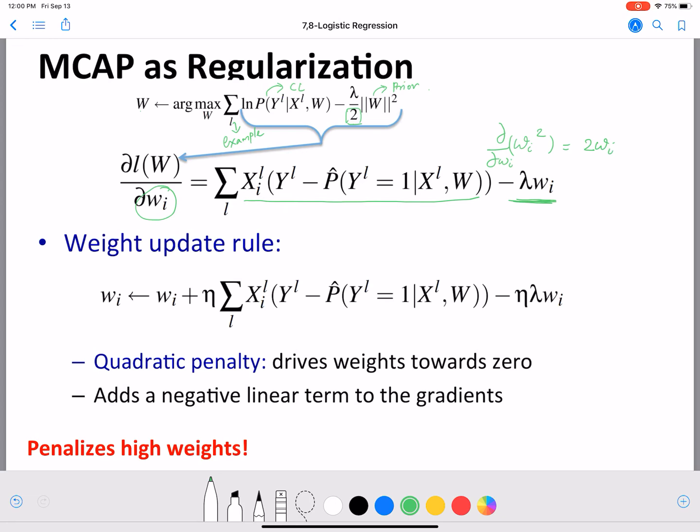Now our new weight update rule for gradient descent is going to be this. W_i would be set to the previous value of W_i plus eta which is the learning rate, and then this first term which is partial derivative of l of W with respect to W_i which we have calculated already during MCLE calculations and we are just going to use that because the first term is the same. Now the second term for the MCAP estimate is coming from the prior and now we know that is minus lambda W_i and we are going to multiply that also with the learning rate.